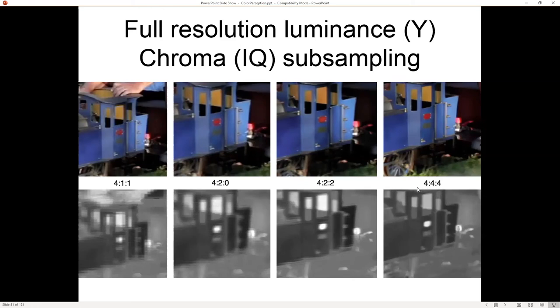So 4:4:4 means I'm going to in a two by two neighborhood block, I'm going to keep all four values for each of YIQ. Or I could say I'm only going to keep two values in each of I and Q, throwing away some information. So these top, and then 4:1:1 only keeps one value of each of I and Q. So this is the most throwing away data.